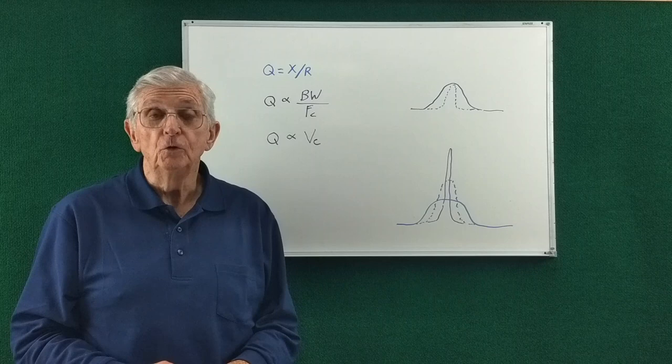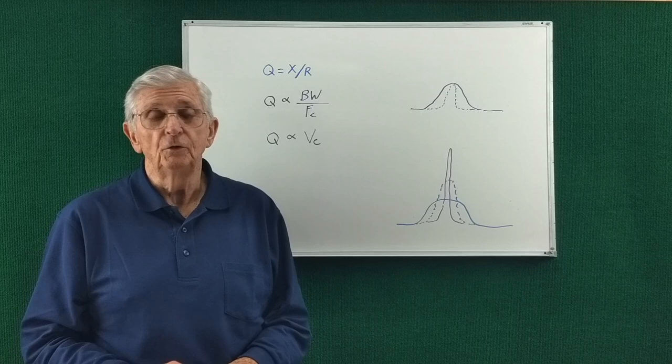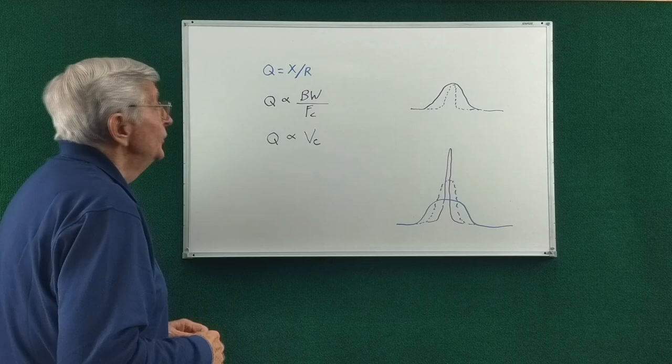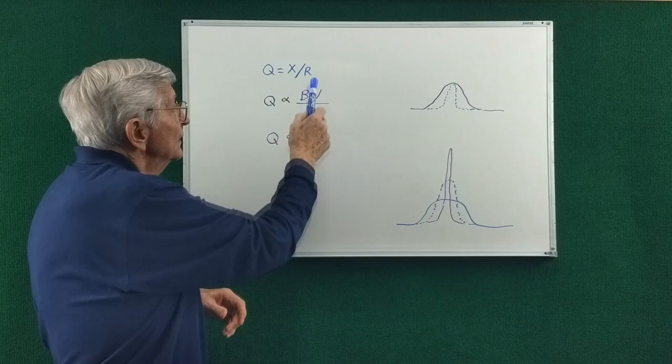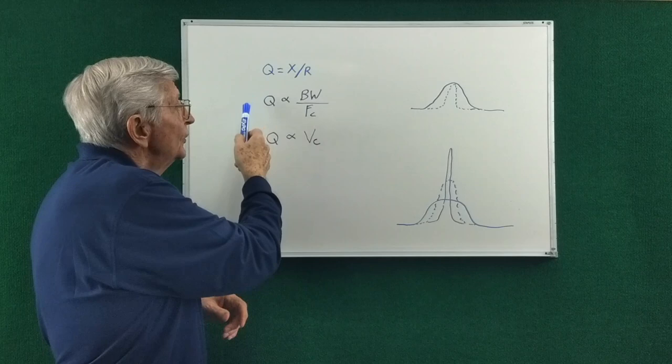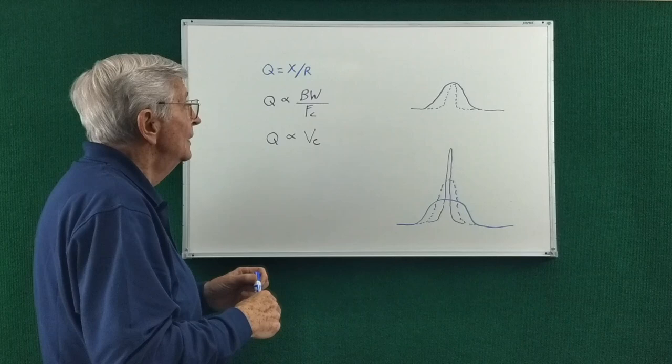There are mag loops out there of various Q or quality factors - high Q ones and low Q ones. So what is Q exactly? The Q of a component, like an inductor or capacitor, is its reactance divided by its resistance. Now when we talk about the Q of a resonant circuit, that would be an L and a C, the Q is proportional to the bandwidth divided by the center frequency.